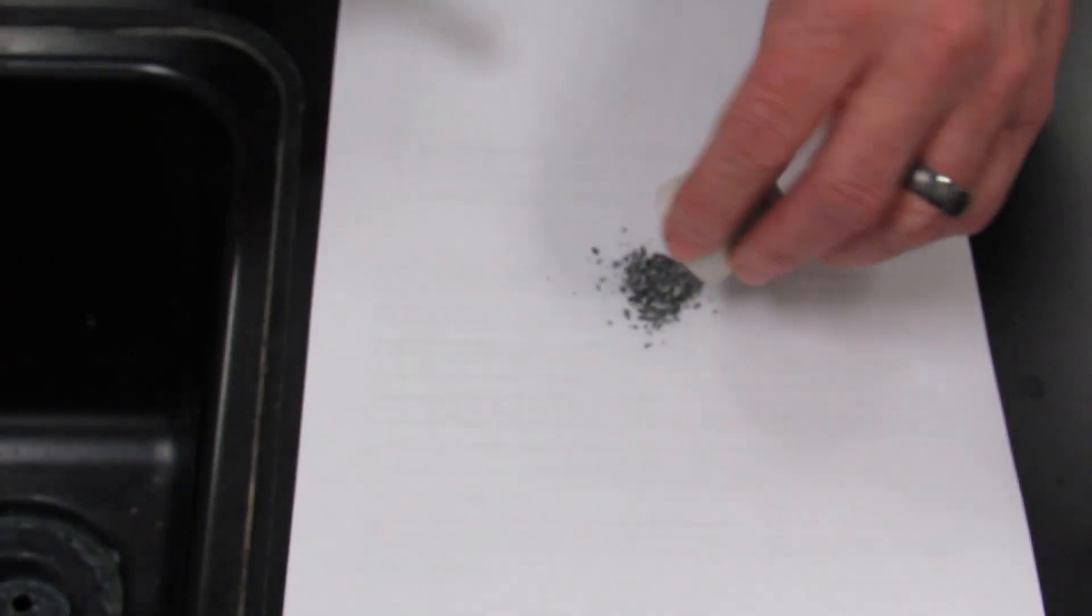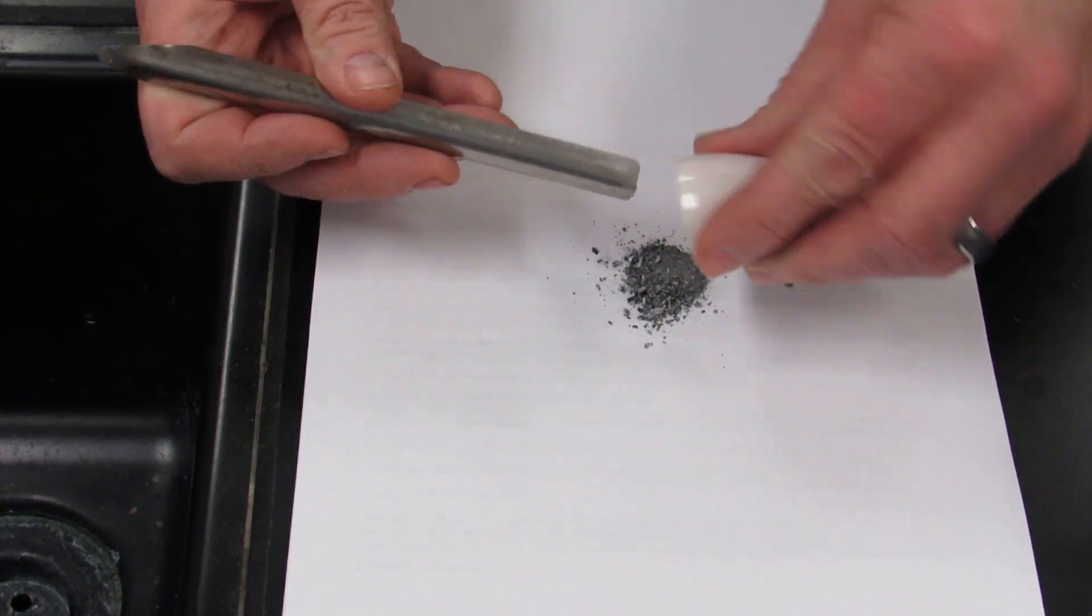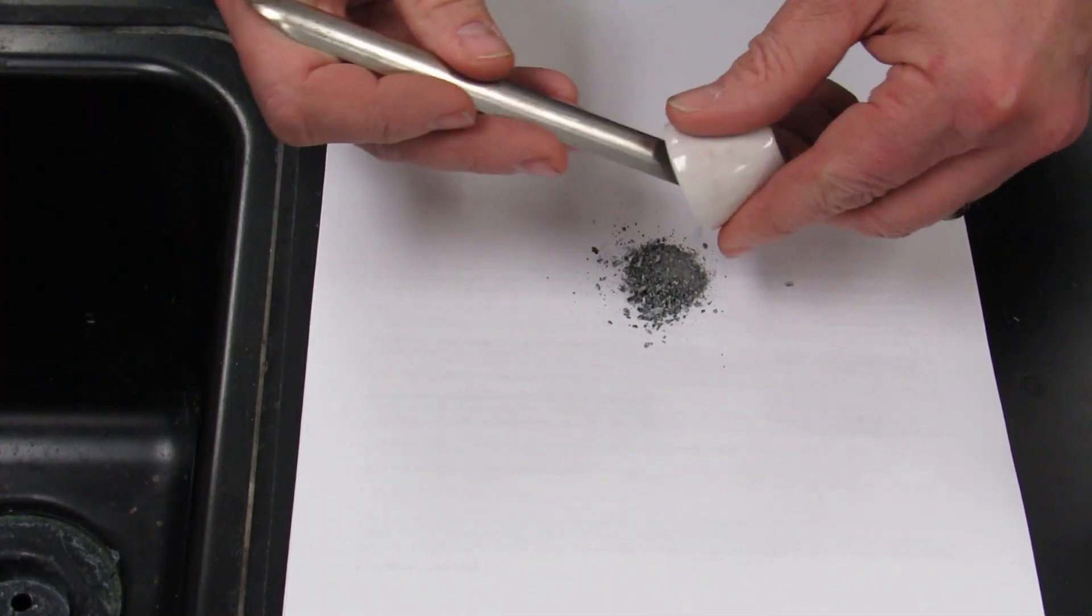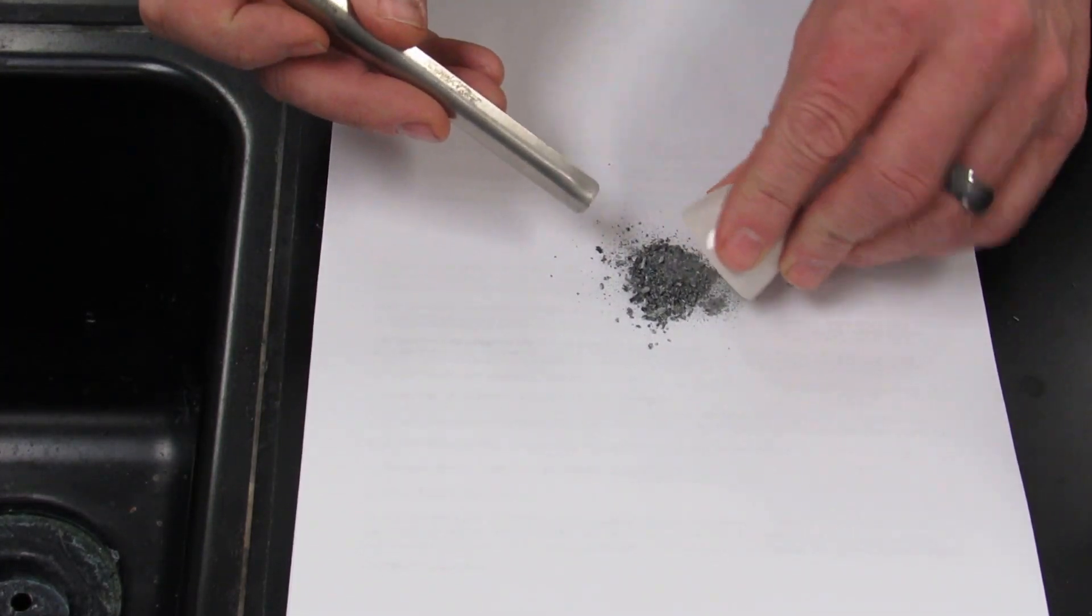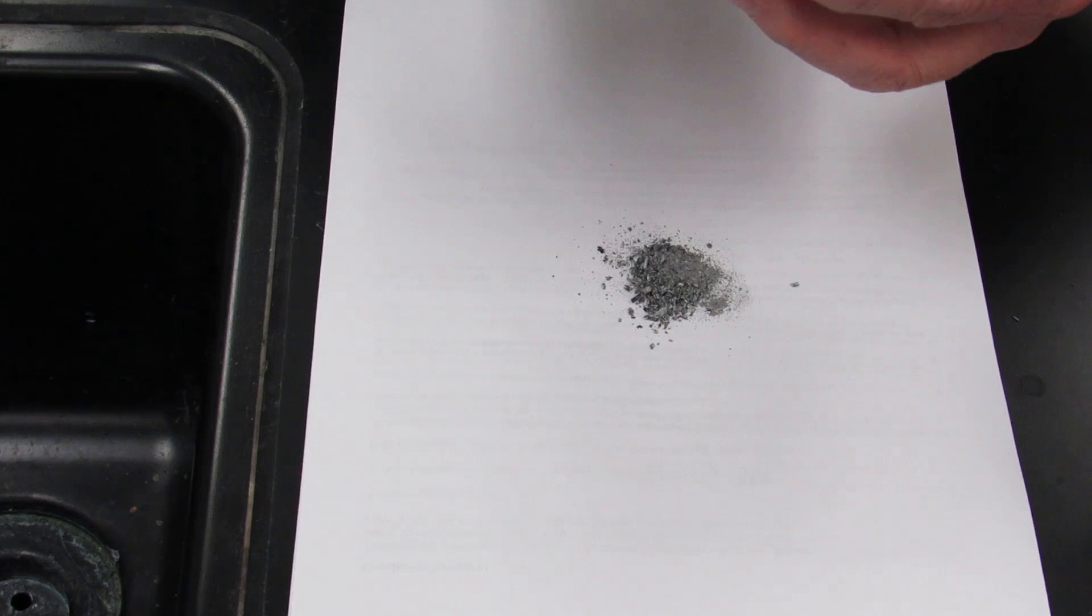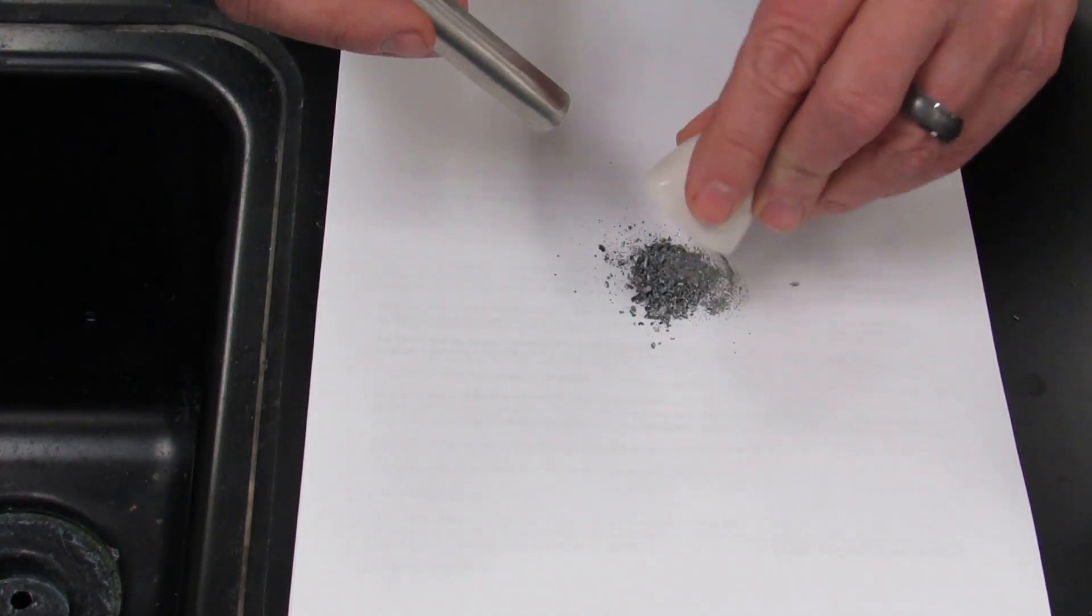Now it's time for clean up. You're going to shake out the solid out of the crucible into the trash can. I did it on a piece of paper here just to show you what it looks like. Scrape it out good with a spatula to the best of your ability. Get out as much as you can.